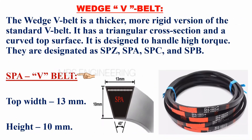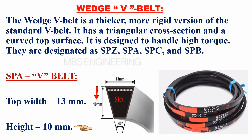We will understand the SPA V-belt. The top width of the SPA V-belt is 13 millimeters. The height of the SPA V-belt is 10 millimeters. Please take a look at the figure that shows the SPA V-belt.